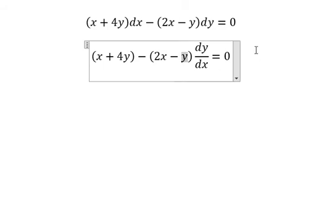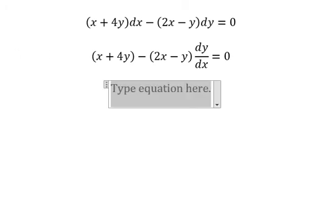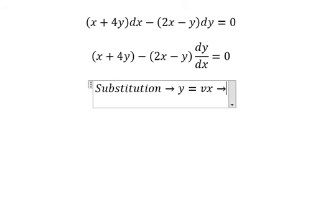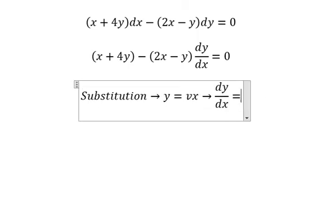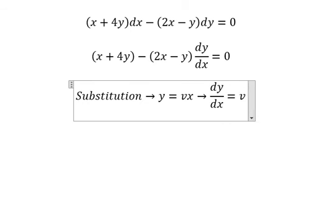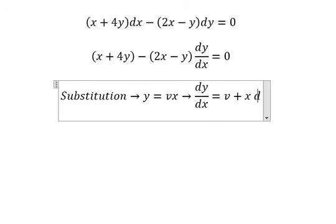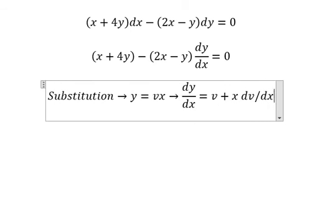So in this situation, we can use this substitution. We put y equals to vx. So if we do first derivative for both sides, we get dy over dx equals to v, and we have x dv over dx.